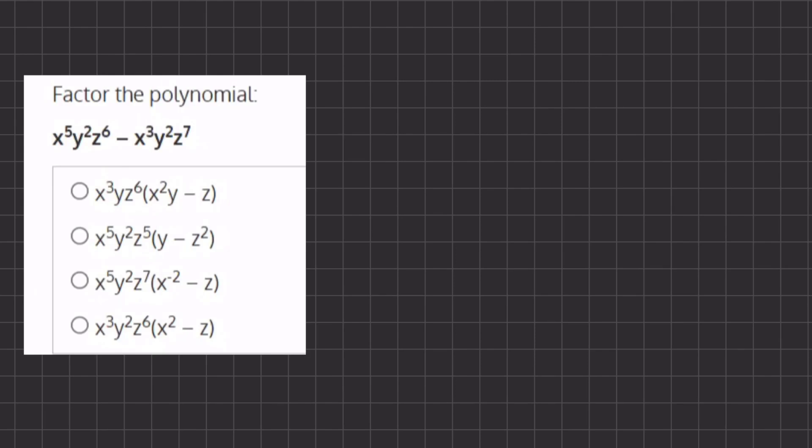All right, so in this problem we want to factor the polynomial, and we're going to do so by taking a look at each variable on its own and finding its common factor to factor out of the polynomial.